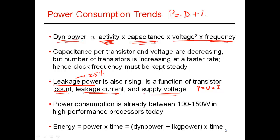The next thing to understand is energy, which is simply power multiplied by time. If you have a program that runs for three seconds on a 100-watt processor, then the energy consumed is P × T, which in this case is 300 joules.